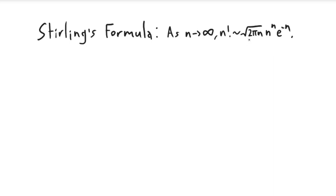If you're not familiar with what it means for things to be asymptotic, it basically just means that the ratio of those two things converges to one. So if I take n factorial, I divide by square root of 2π n times this expression, as n goes to infinity this converges to one.